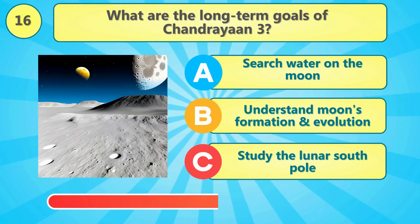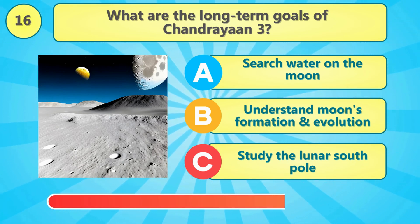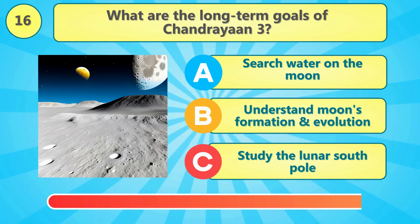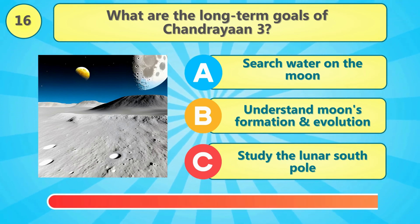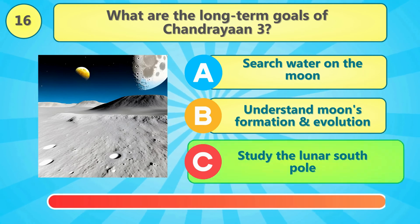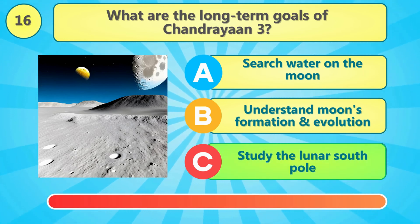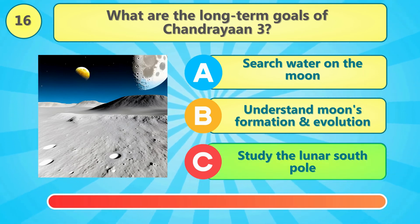What are the long-term goals of Chandrayaan 3? The answer is option C.